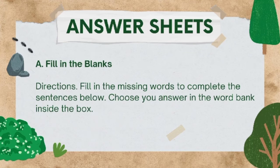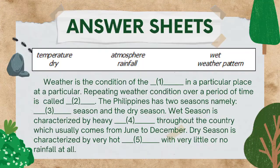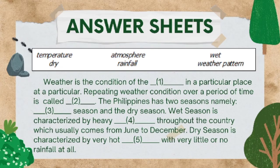At this moment, we will be having a test. Read the directions carefully and answer the following items honestly. I will give you 10 minutes to answer. For the first part, fill in the missing words to complete the sentences using the word bank inside the box. The word bank includes: temperature, dry, atmosphere, rainfall, wet, and weather pattern.